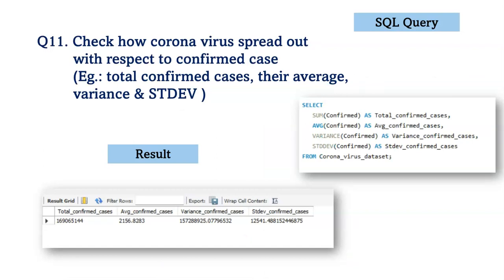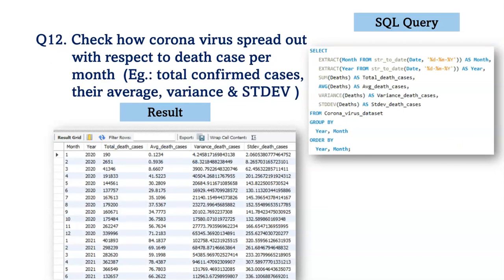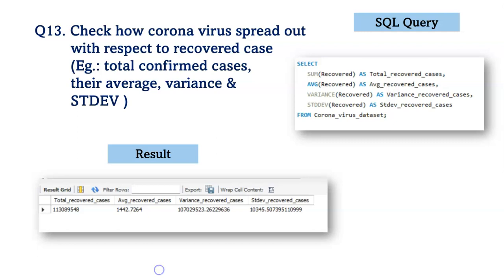Next, we check how coronavirus is spread out with respect to confirmed cases. For this, we have used SUM, AVG, VARIANCE, and STDDEV functions. Similarly, we check its spread with respect to death cases per month, and also with respect to recovered cases, using the same functions grouped and ordered by a particular month of a particular year.